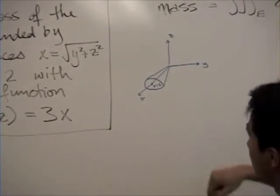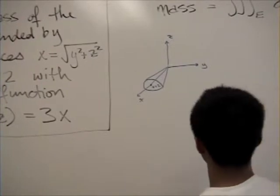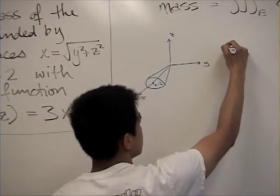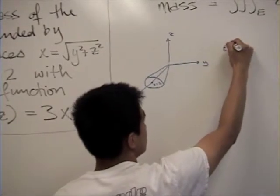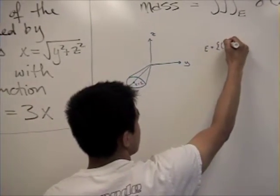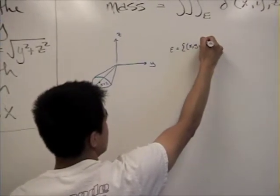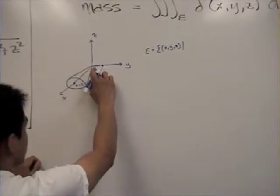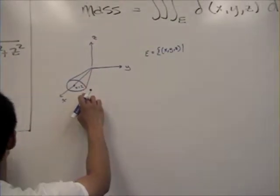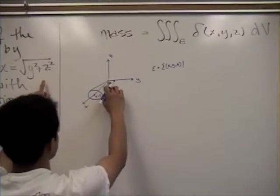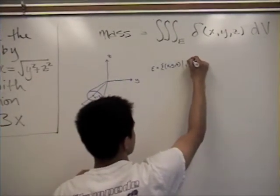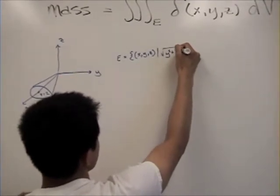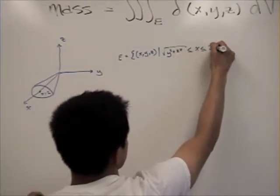We're going to talk about the boundaries. Setting this in terms of the region E, we're going to talk about x. x is going from this function to 2, so it's going to be from the square root of y squared plus z squared to 2.